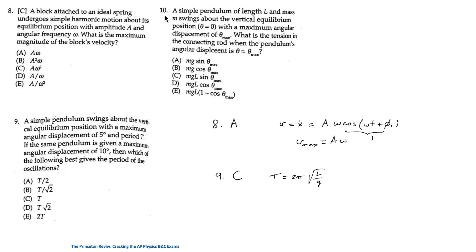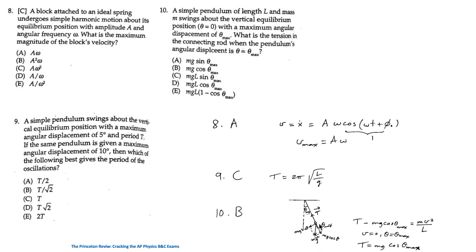For question 10: a simple pendulum of length L and mass M swings about the vertical equilibrium position (θ = 0) with a maximum angular displacement of θ_max. What is the tension in the connecting rod when the pendulum's angular displacement is maximum? From the free body diagram, along the radial axis: T minus mg·cosθ equals the centripetal force mv²/L. When θ is at its maximum, the velocity is zero, so the tension equals mg·cos(θ_max). The answer is B.